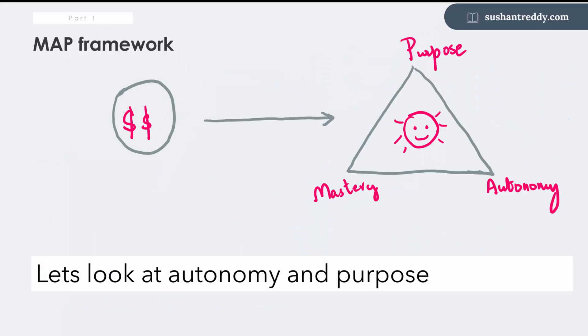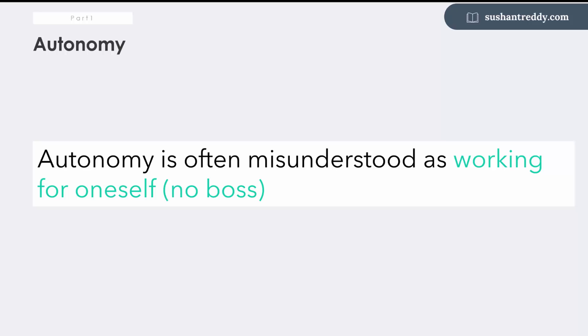So in this episode, we'll talk about the other two sources of internal motivation: autonomy and purpose. Let's first take autonomy. I always used to confuse myself that being autonomous is not being answerable to anyone or not taking orders from anyone.